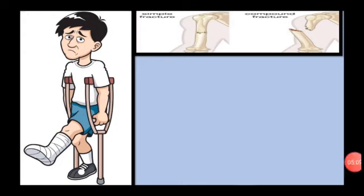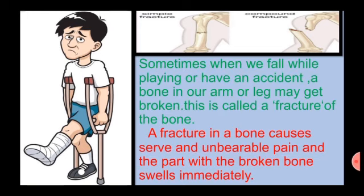Fracture. A fracture is a broken bone. It can range from a thin crack to a complete break. Sometimes when we fall while playing or have an accident, a bone in our arm or leg may get broken — this is called a fracture. A fracture causes severe and unbearable pain and the part with the broken bone swells immediately. There are two types of fracture: simple fracture and compound fracture.